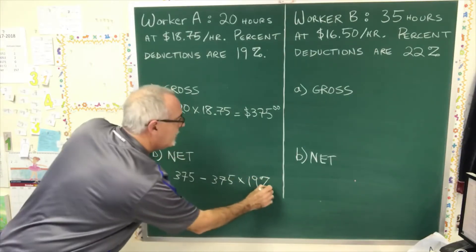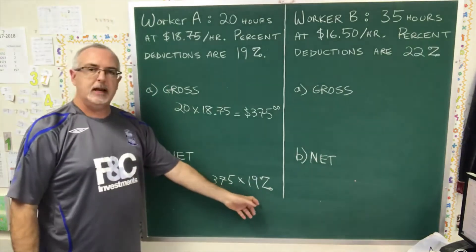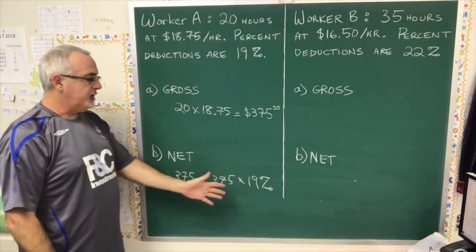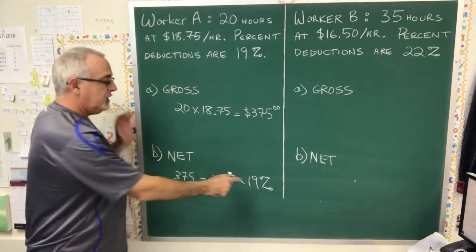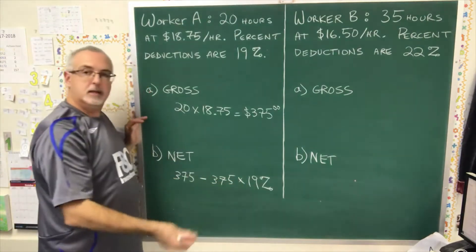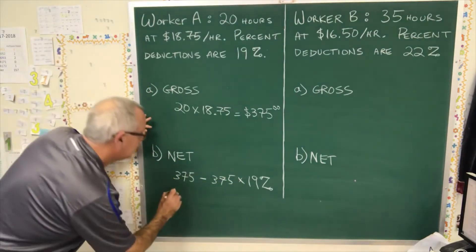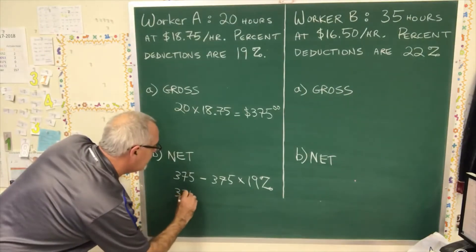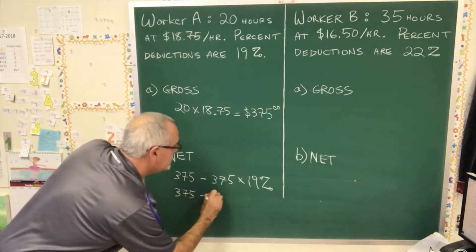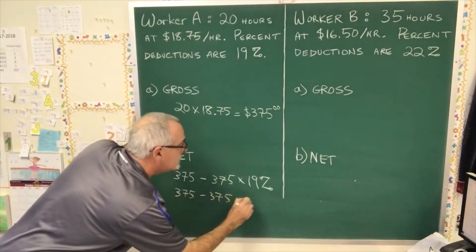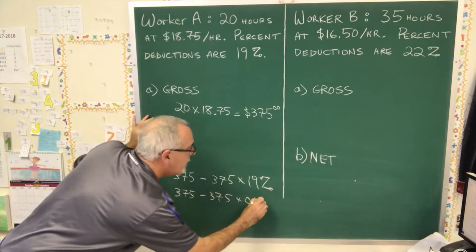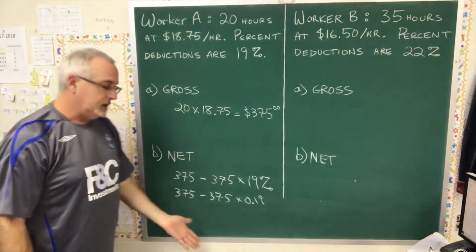But we don't really use percent in a calculation. Usually, we prefer to switch it to decimal. And we'll turn a percent into a decimal by dividing by 100. So this becomes 375 minus 375 times 0.19. That's the decimal version of 19%.